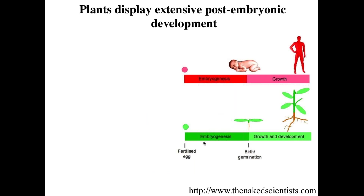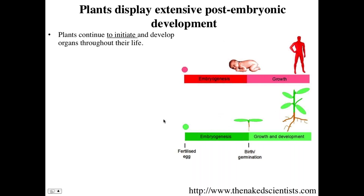A huge feature of plants is that they have really extensive post-embryonic development. If you compare that to a human, for both there's a fertilized egg and some process of embryogenesis that forms the organism. But when you were born, you had every organ you're ever going to have — it's not like you grew a new organ in your 20s. Conversely, plants are continually developing new organs. They have organs at full maturity that they didn't have when they germinated — for example, flowers. Plants will continue to initiate and develop organs throughout their life.